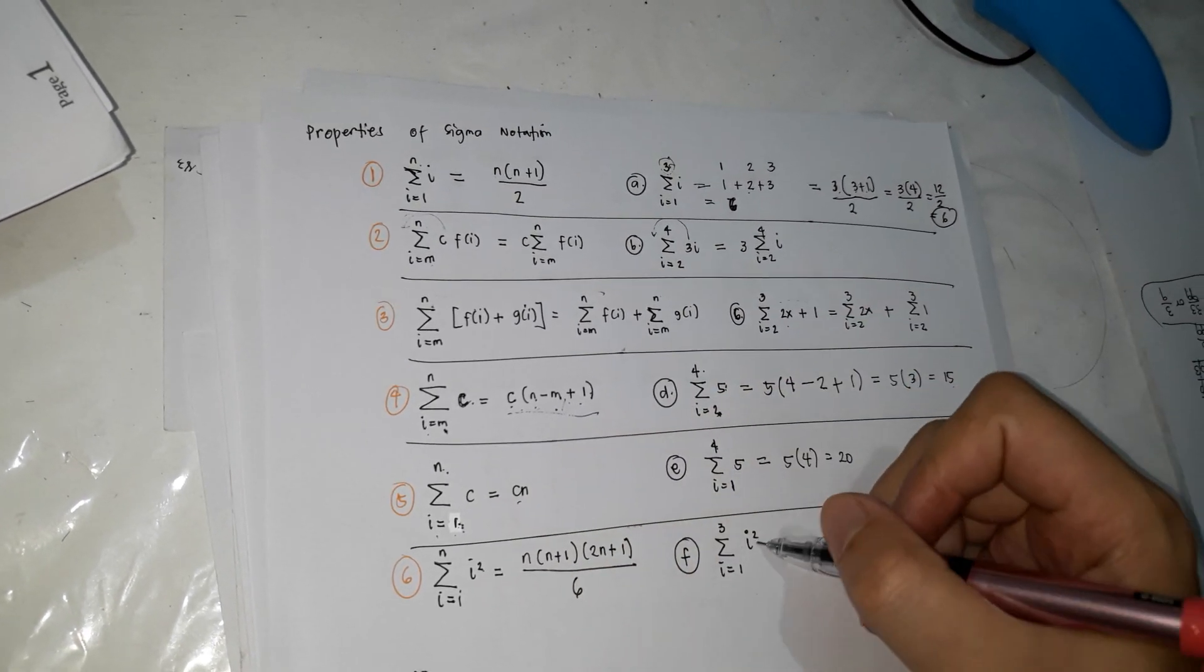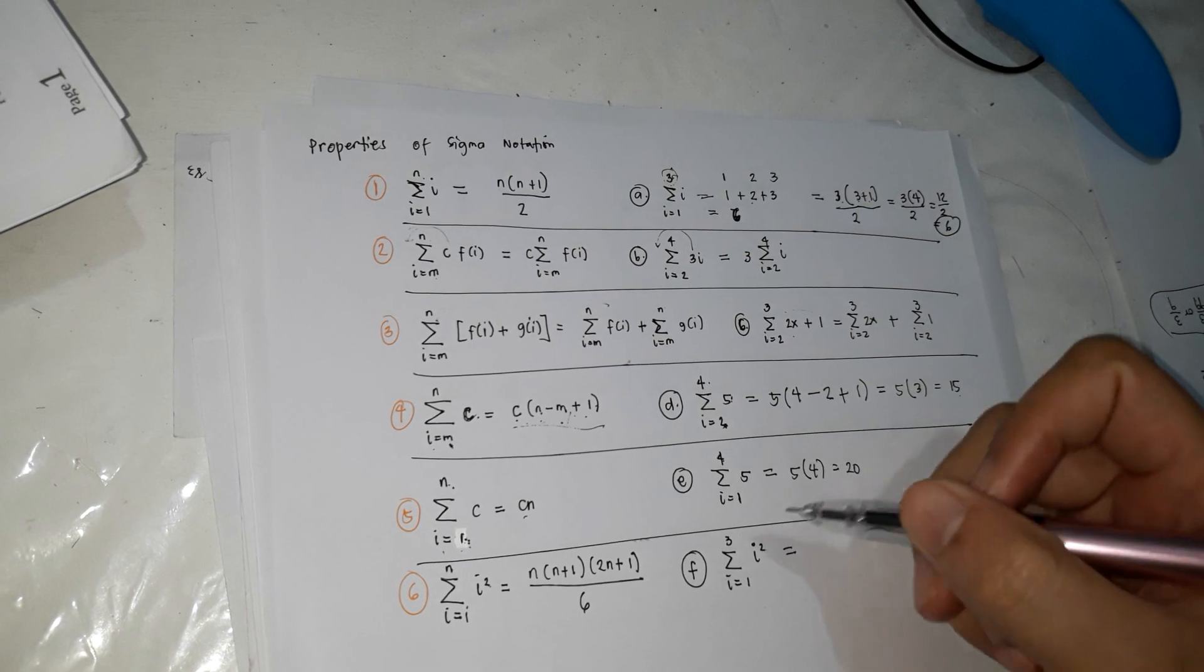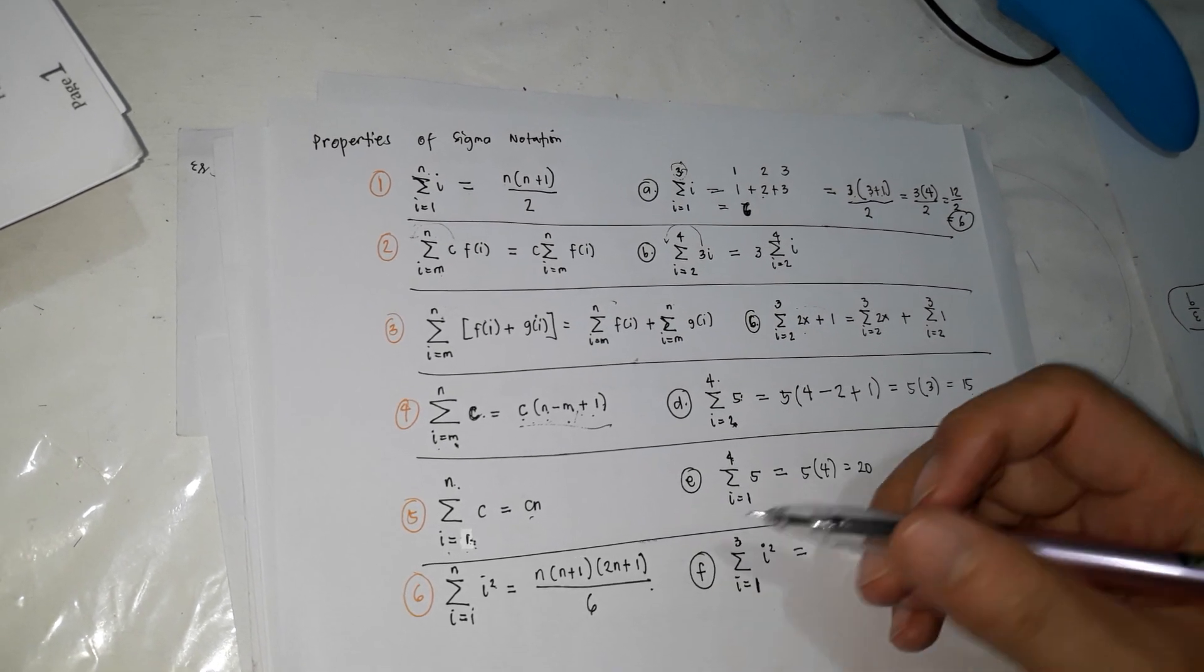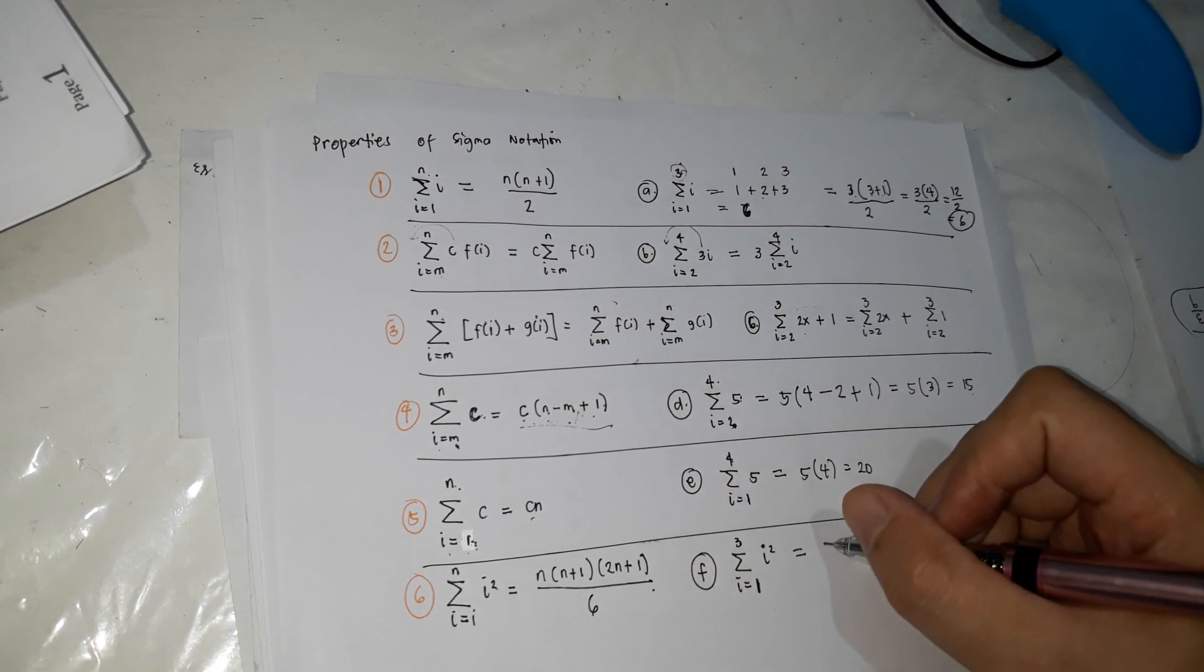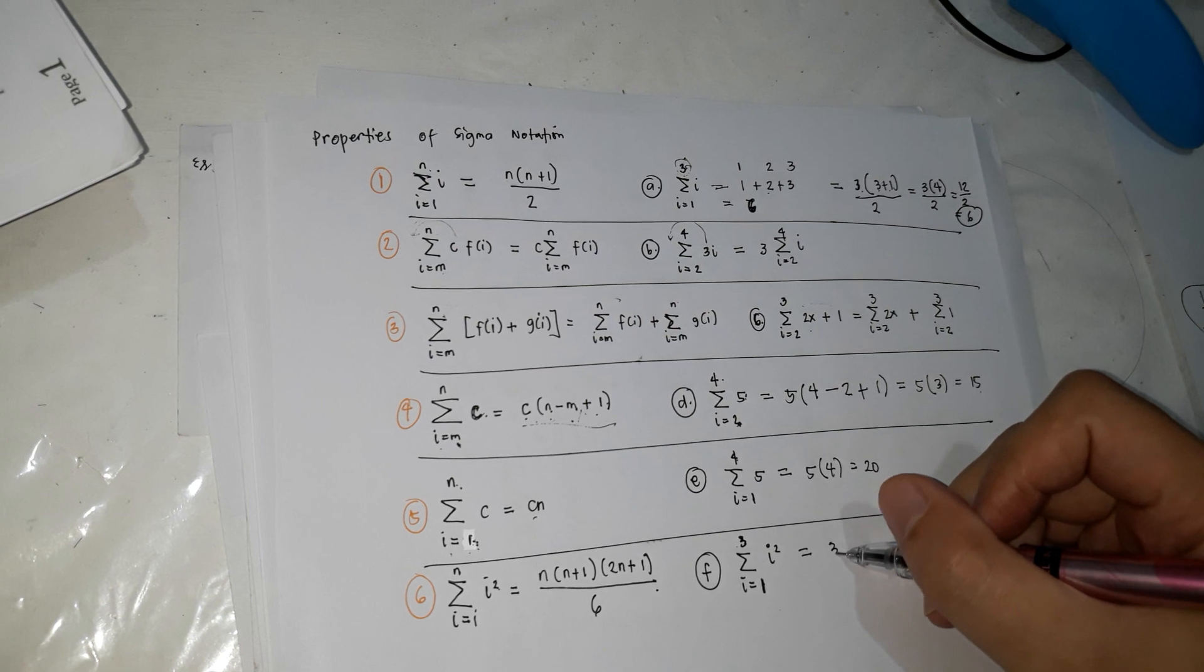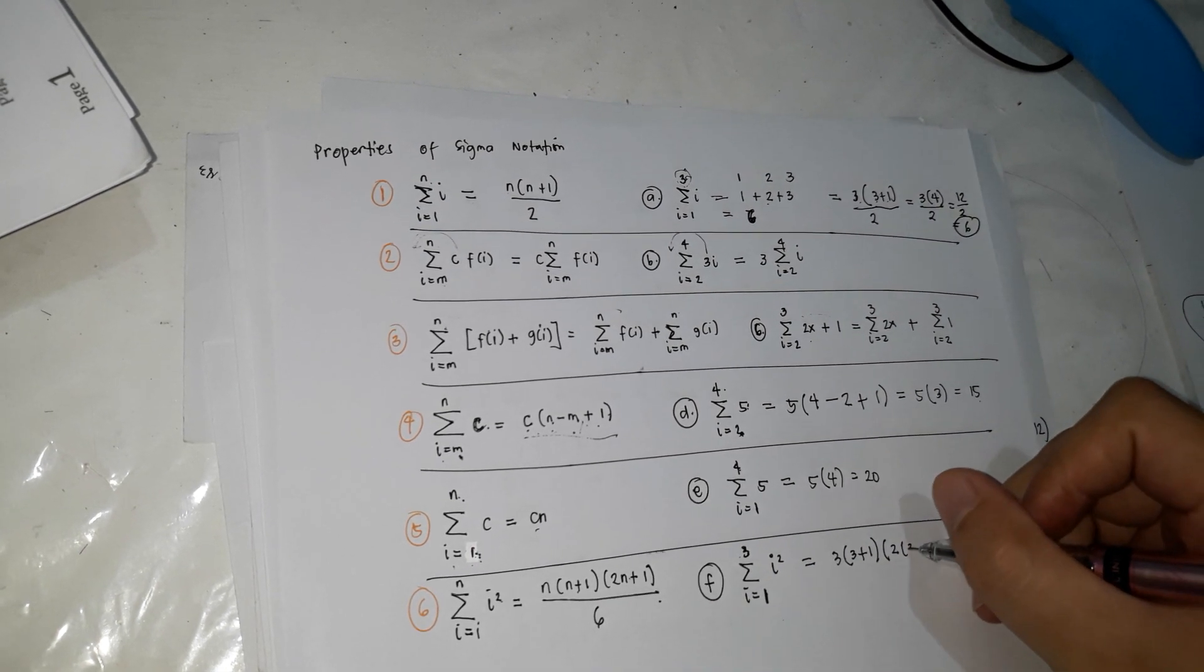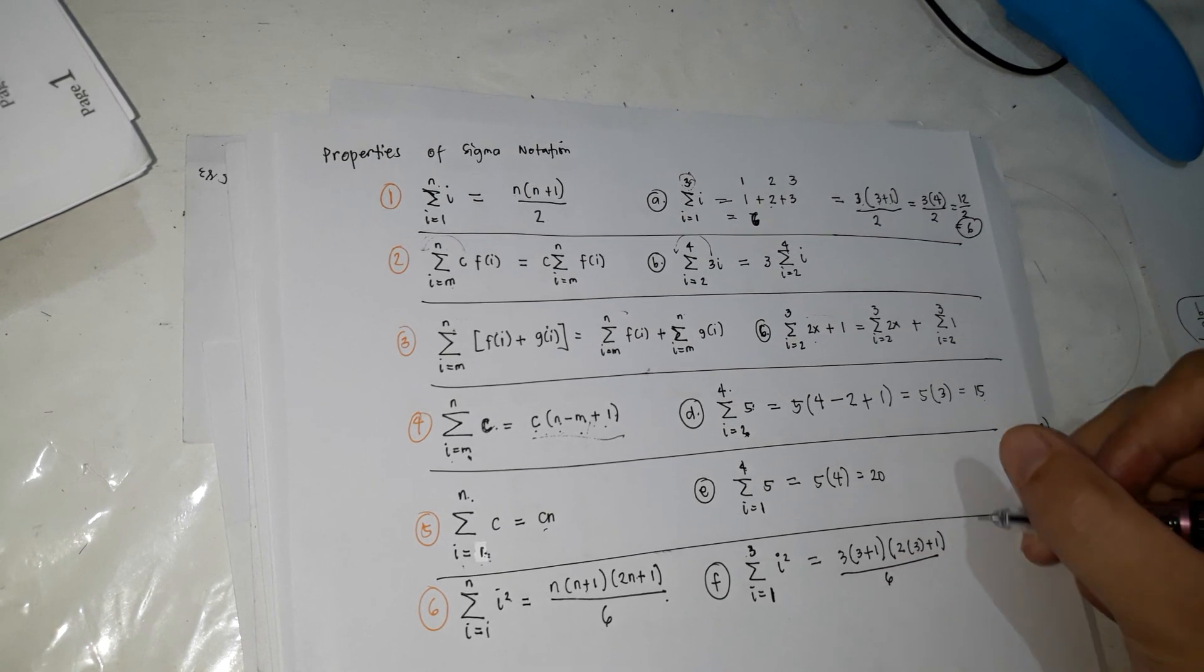Next example, kapag may I squared. Kapag may I squared, the answer is, what is N? Again, kapag nag-start lang ito sa 1 hanggang 3. Kapag iba na ito, kapag hindi na ito 1, you cannot use this property. So answer nito, N, which is 3 ang N, yung sa taas ang N, 3, 3 plus 1, 2, 3 plus 1, over 6.